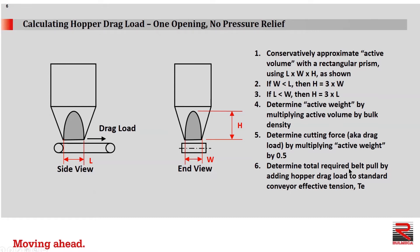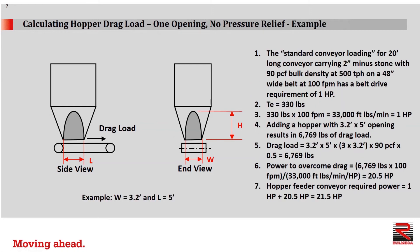Then we can determine the total required belt pull by adding hopper drag load to the standard conveyor effective tension. Here is an example: one opening, no pressure relief. The standard conveyor loading for a 20-foot long conveyor carrying 2-inch minus stone with a 90 pound per cubic foot bulk density at 500 tons per hour on a 48-inch wide belt at 100 feet per minute has a drive requirement of 1 horsepower. Effective tension is 330 pounds. 330 pounds times 100 feet per minute equals 33,000 foot-pounds per minute, which equals 1 horsepower.